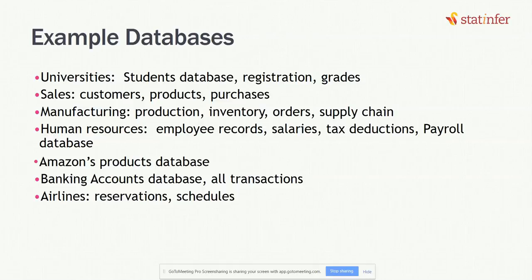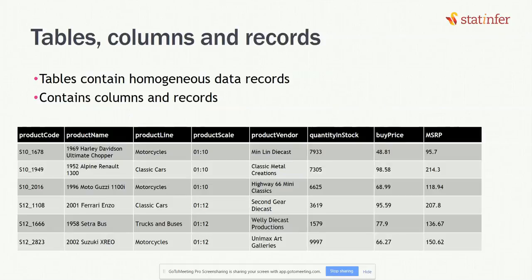Amazon's product database has product details in one table, customer details in one table, and vendor details in another. Banking accounts databases are another example. Each table contains specific information. A table simply contains rows and columns — each row is a record or data value, each column tells us one particular type of information. Here is one example of a products table with product code, product name, product line, sales, vendor, quantity, stock, price, and MSRP. This is essentially what we've been calling a data frame or dataset.